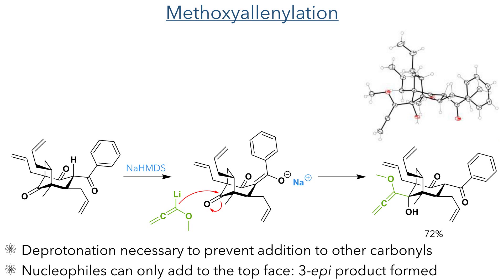However, they only observed attack on the top face of the molecule. After screening a range of reaction conditions and different nucleophiles, they discovered that they could only ever obtain reaction at the top face of the molecule as the bottom face is likely too hindered. It is for this reason they obtained the 3-epi product and not their initial target, which was the natural form of Hypatulin B.